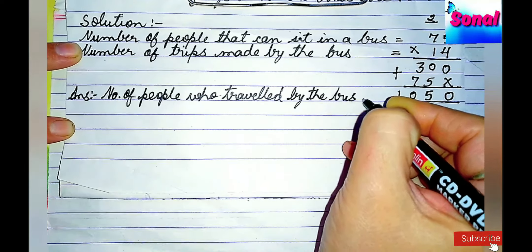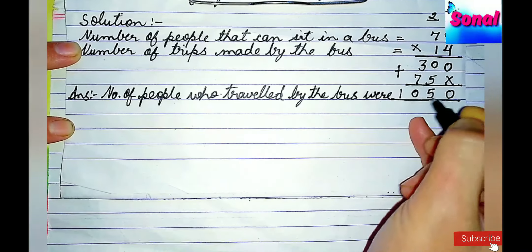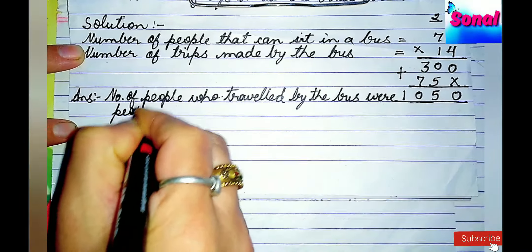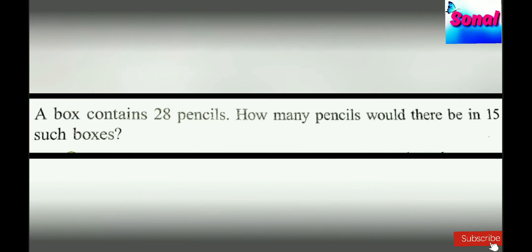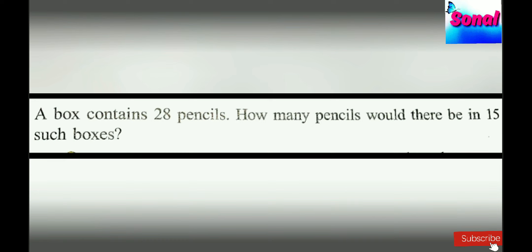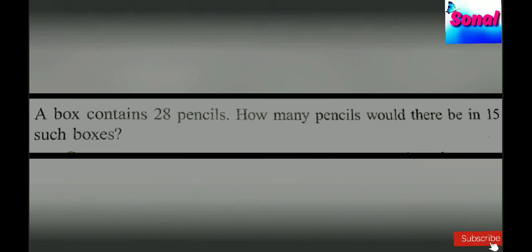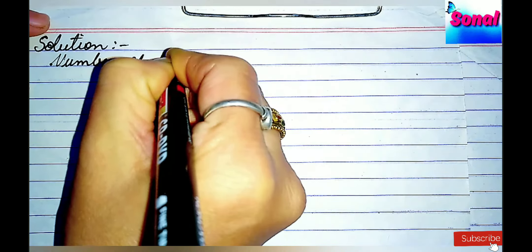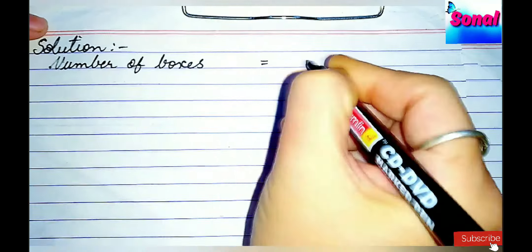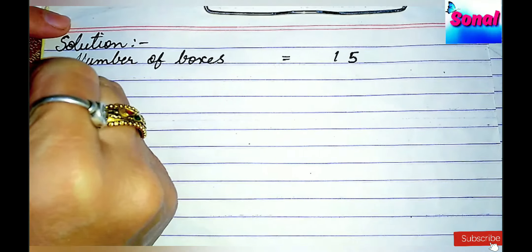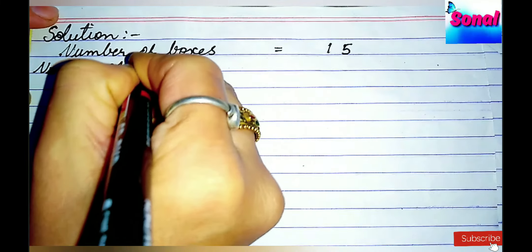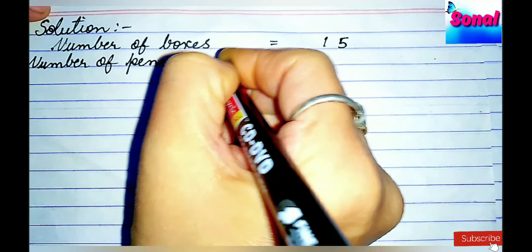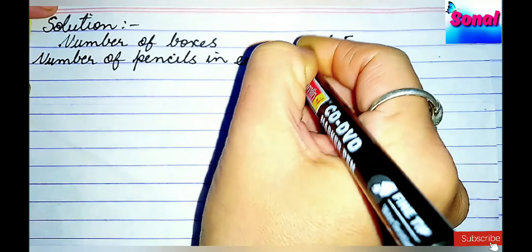A box contains 28 pencils. How many pencils would there be in 15 such boxes? The solution for this is children, number of boxes, 15 in number, and number of pencils in each box, 28 in number.